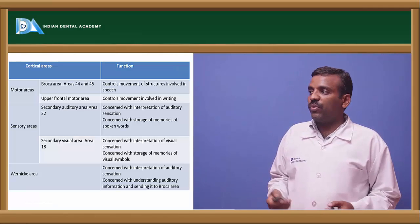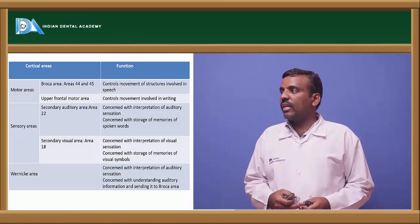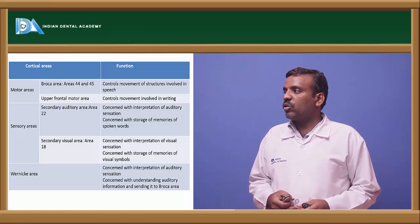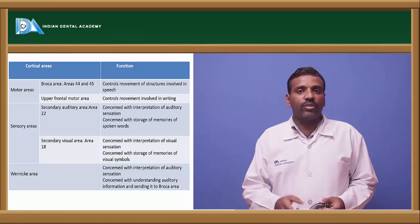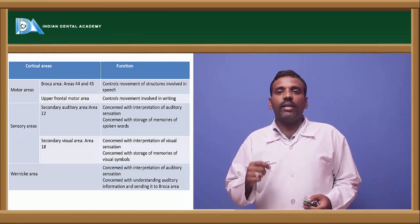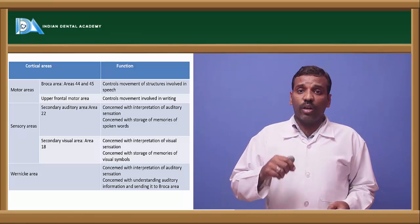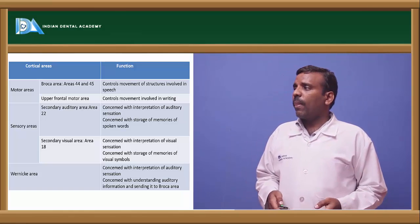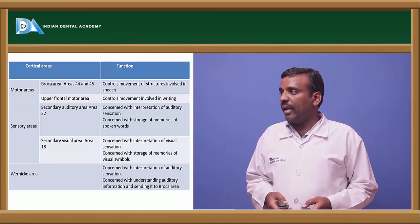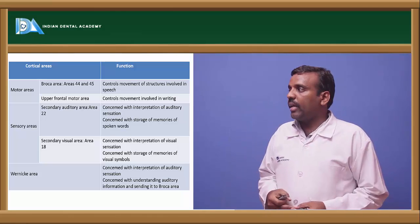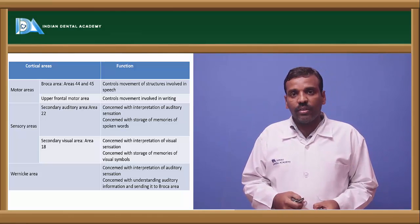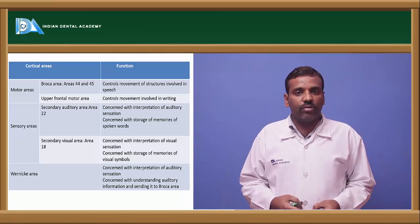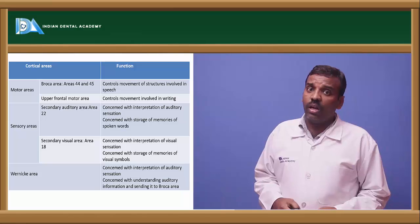Areas responsible for speech: Broca's area (areas 44 and 45) is responsible for speech production. The upper frontal motor area controls movements in writing. Sensory areas 22 and 18 are concerned with auditory sensation, hearing, memories, and spoken words. Wernicke's area is responsible for interpretation of auditory sensation. Primary auditory areas are 41 and 42.